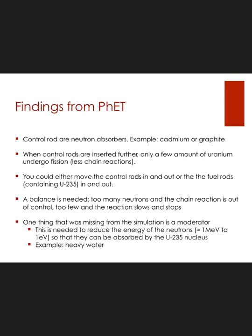Basically, what heavy water is: one of those hydrogens in water, instead of it just being one proton, has an extra neutron in there. It doesn't change the number of electrons, but it does make it slightly heavier. Therefore, heavy water has one or more extra neutrons with the hydrogen, making it slightly heavier. It will slow down these neutrons, therefore making it more likely for the neutrons to be absorbed by uranium-235.